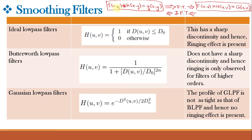Our input image f(x,y) convolved with filter mask h(x,y) gives output image g(x,y) in the spatial domain. In the frequency domain, after taking the Fourier transform, F(u,v) multiplied by H(u,v) gives output G(u,v). The key difference is that in the spatial domain we take convolution, whereas in the frequency domain we only need to do multiplication. Taking the inverse Fourier transform returns us to the spatial domain.